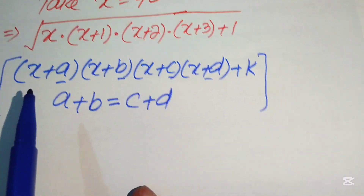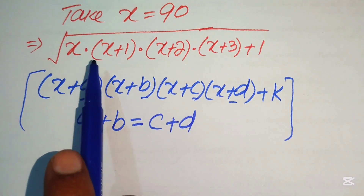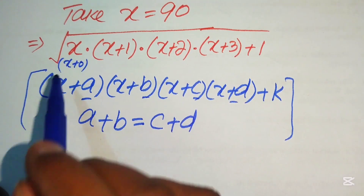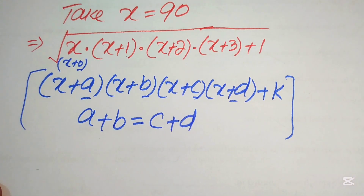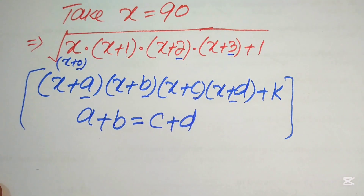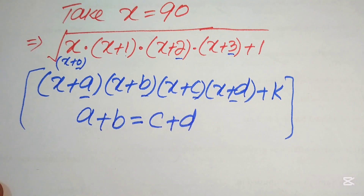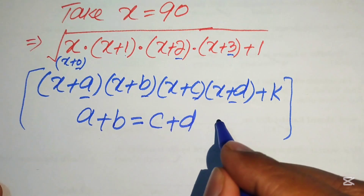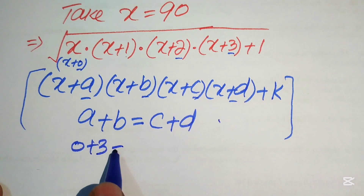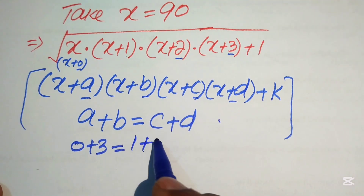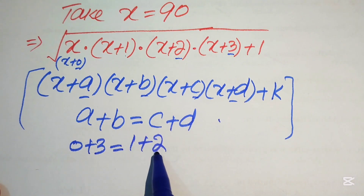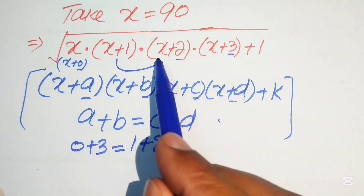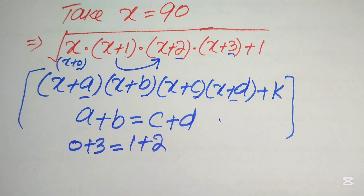Our first target is to rearrange these four factors. We write x as x+0. Now you see: 0+1 equals 1 but 2+3 equals 5, so those are not equal. But 0+3 equals 3 and 1+2 also equals 3. So now you make the pair of x with (x+3), and the pair of (x+1) with (x+2).